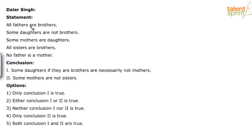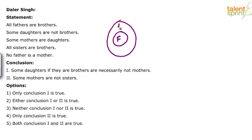Look at the statements: all fathers are brothers, some daughters are not brothers, some mothers are daughters, all sisters are brothers, no father is a mother. Let's draw the basic diagram for these statements. All fathers are brothers. Now, some daughters are not brothers — this is a 'some not' type of statement, so be careful.